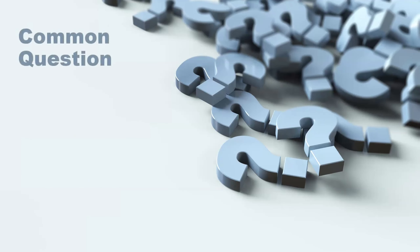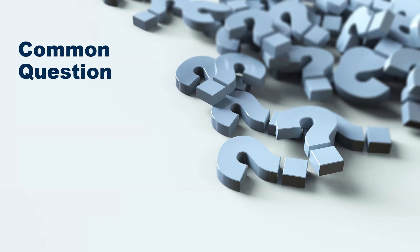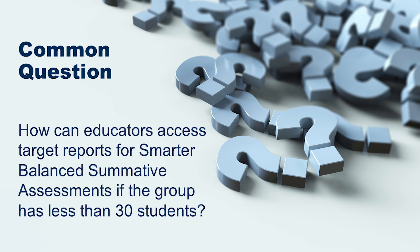Another common question about results in CERS is: how do educators access target reports for Smarter Balanced summative assessments if the group has less than 30 students? Since the target reports in CERS require a minimum of 30 students, it is recommended to create a group of at least 30 students to be able to access target reports.